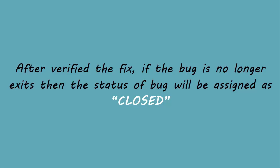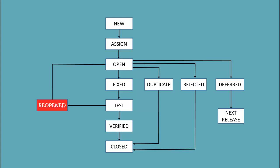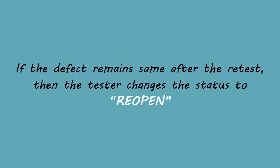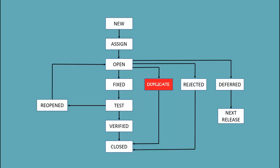Sometimes while doing retest, we may encounter the same issue again, which means the bug was not fixed properly. Now testers change the status to 'reopen'. If the defect remains the same after the retest, then the tester posts the defect using a defect retesting document and changes the status to 'reopen'. Again, the bug goes through the lifecycle to be fixed.